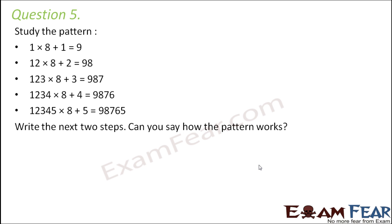Question number five: study the pattern. 1 × 8 + 1 = 9; 12 × 8 + 2 = 98; 123 × 8 + 3 = 987. When you look at the pattern, the first number was 1, then 1 2, then 1 2 3, then 1 2 3 4, then 1 2 3 4 5, and so on — each step adds one more digit.